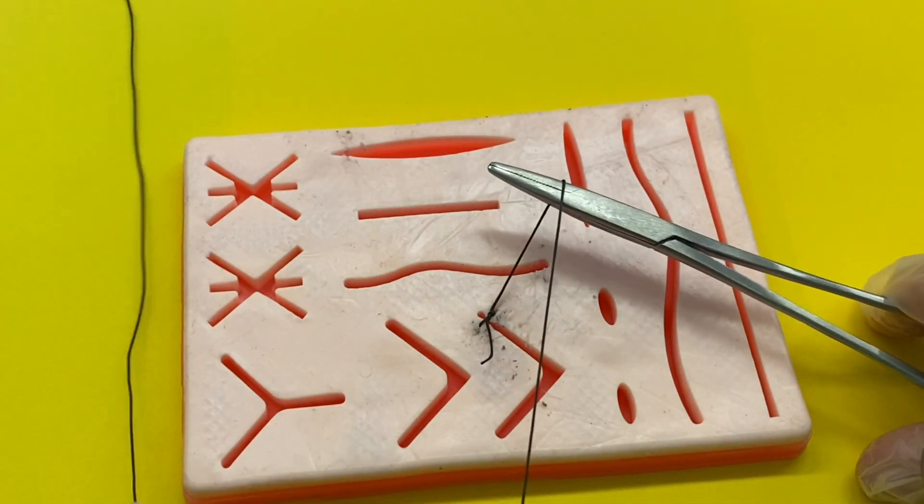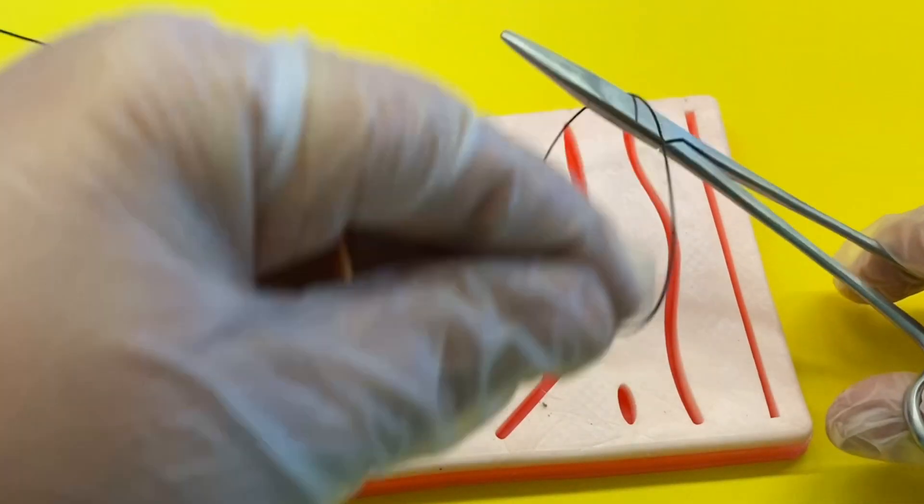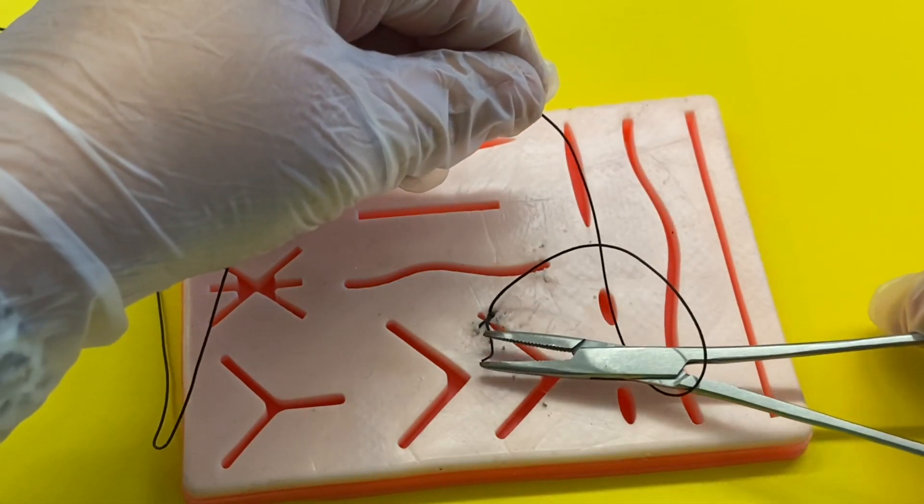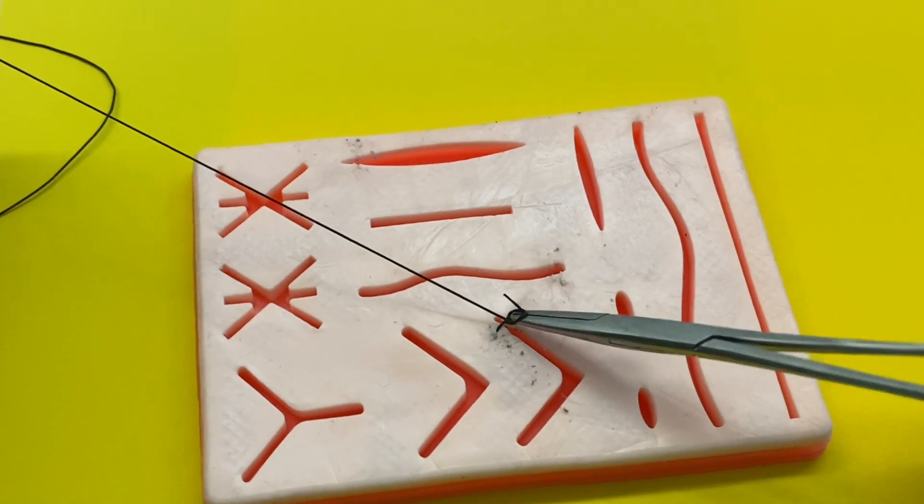So put the scissors down, as you can see here, and you're going to wrap around to make a circle around the needle holder. So wrap around once and then grab the end of the thread and pull through. And now you've actually made your first knot.